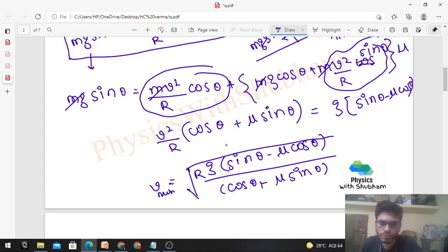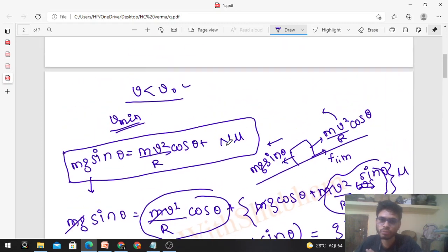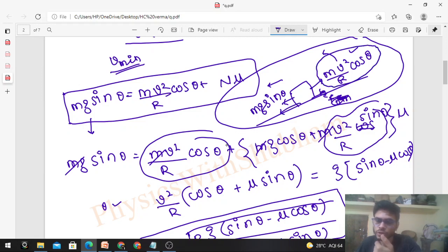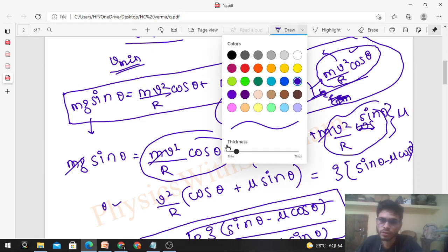As you keep decreasing v, friction force acts upward. If you further decrease v, friction will attain its limiting value. After that, if you decrease v more, the car will slip in the downward direction. So what is v minimum? V minimum is when the friction is limiting upward. For v minimum, we can write the equation: mg sin theta equals mv square upon r into cos theta plus f limiting, which is n into mu.